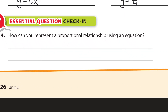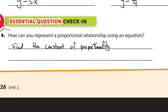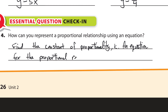So, how can you represent a proportional relationship using an equation? You find the constant of proportionality, which is k. An equation for the proportional relationship is y equals k times x. That's all you need to know for that guided practice. Hope it's been helpful. Thanks for watching.